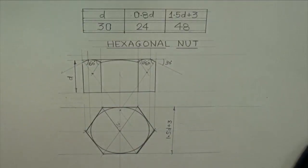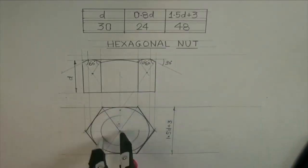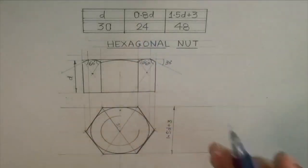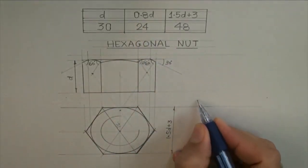Now we will draw threading. D is 30, so outer diameter would be 30. So we will draw 3 fourth, outer diameter would be 3 fourth, inner diameter would be 0.8D, 24, so that will be dark.